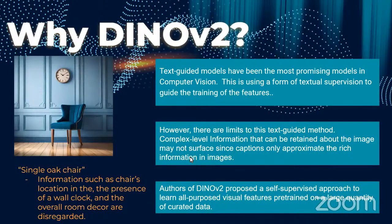So why DINOv2? Text-guided models have been the most promising models in computer vision, using a form of textual supervision to guide the training of features. However, there are limits to this text-guided method. Complex level information that can be retained about the image may not surface, since captions only approximate the rich information in images.